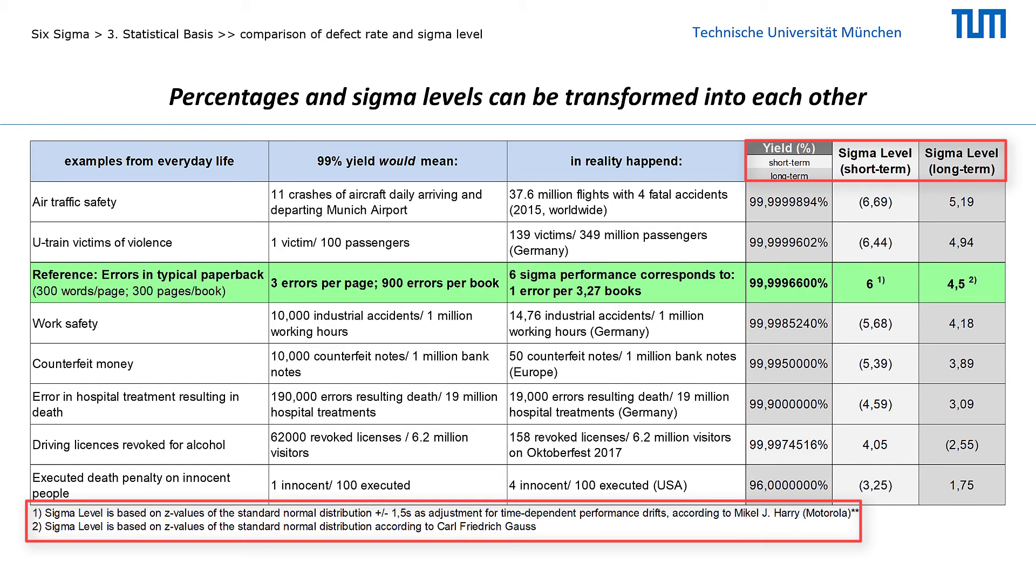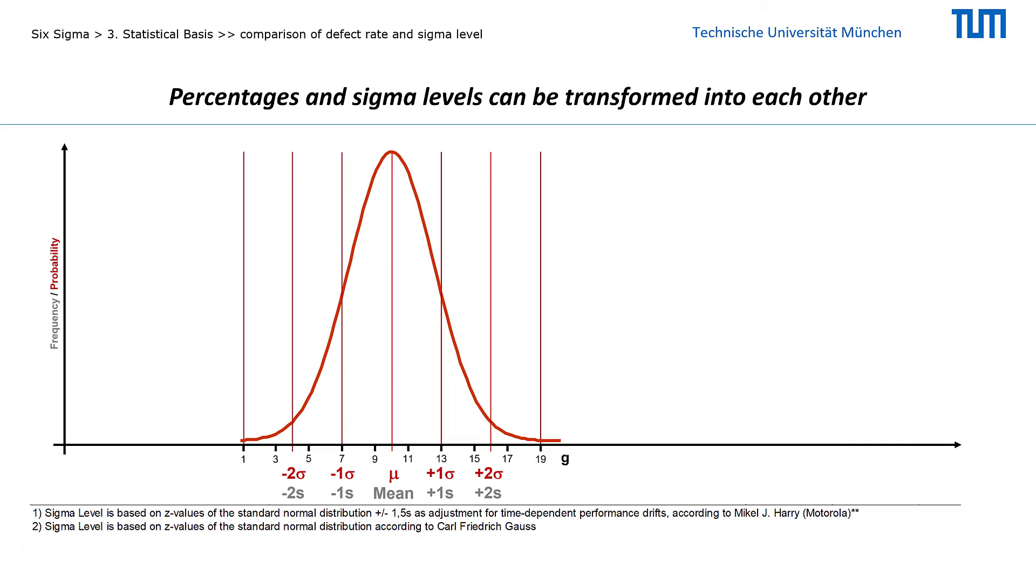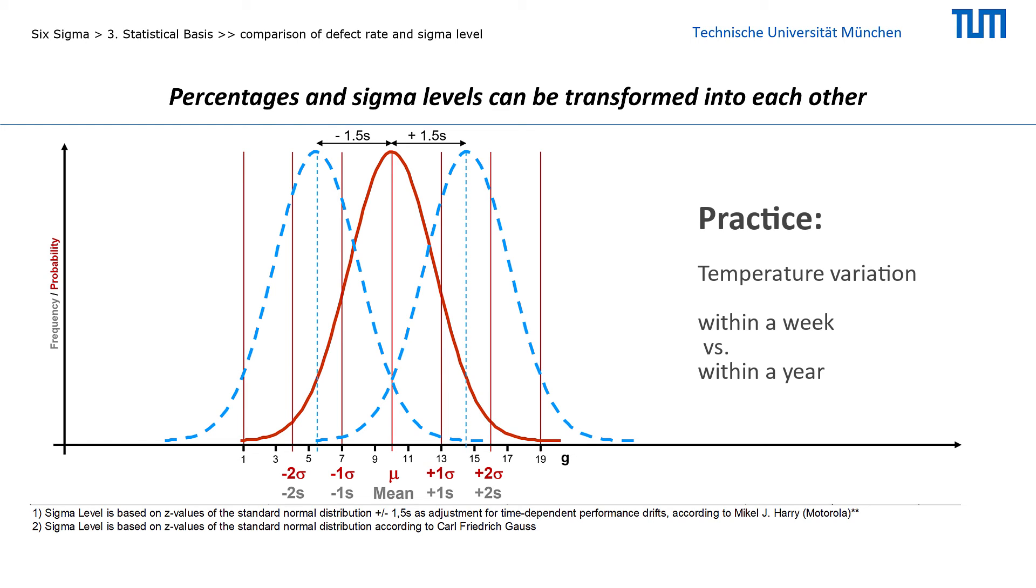What does the differentiation between short- and long-term sigma levels mean? Observations of process performance over longer time intervals show that the mean values of the samples drift about 1.5 standard deviations around the true mean value. This is intuitively understandable when you think of a short-term temperature measurement over the course of a week and compare it with a long-term measurement over a year. The longer the time interval in which data is collected, the greater the probability that also larger deviations and extreme high and low values will occur.